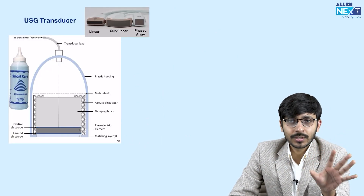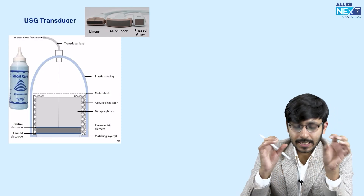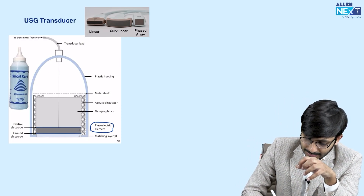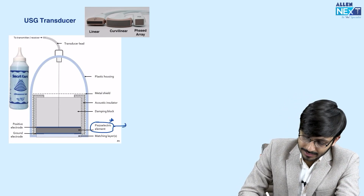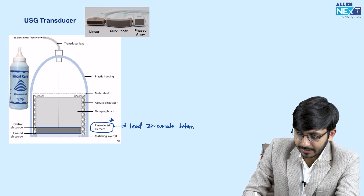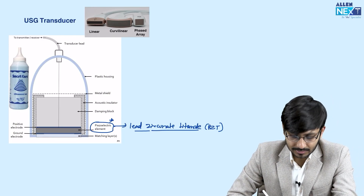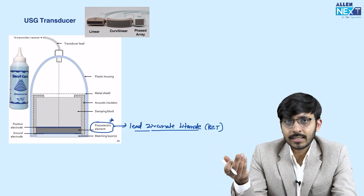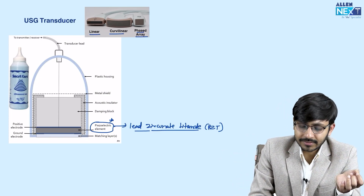Coming on to the main ultrasound transducer, which is the backbone of ultrasound imaging. This is a diagram of an ultrasound transducer, and the most important structure in it is the piezoelectric element. The material it is made of is lead zirconate titanate, also known as PZT. There are different types and shapes of ultrasound transducers — they can be linear, curvilinear, or phased array ultrasound probes.